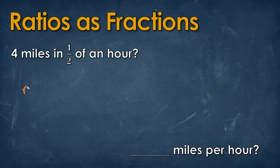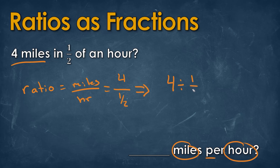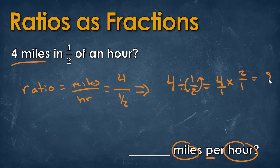Now let's try this one. Our answer will be in miles per hour. We have four miles over one half of an hour, so we have four divided by one half. We rewrite this as four times the reciprocal of one half, which flips to two over one. So we have four times two, which is eight, over one times one, which is one — simplifying to eight. So eight miles per hour is our ratio.